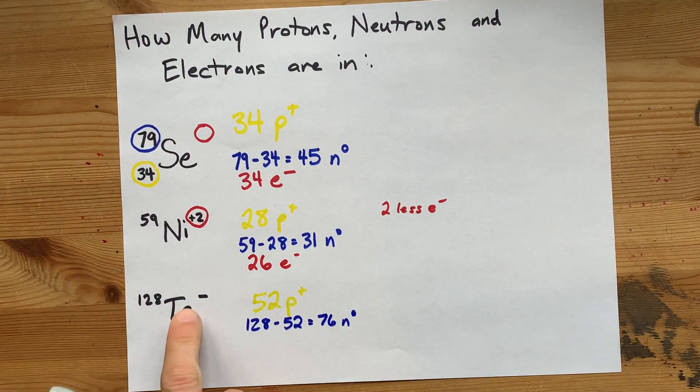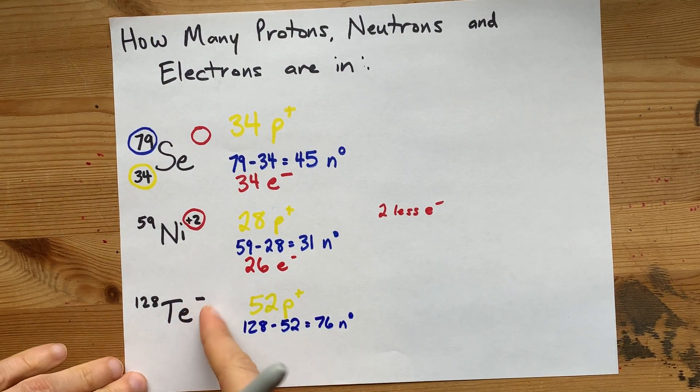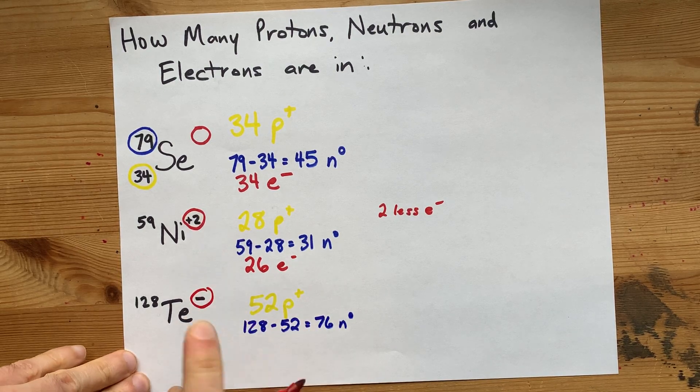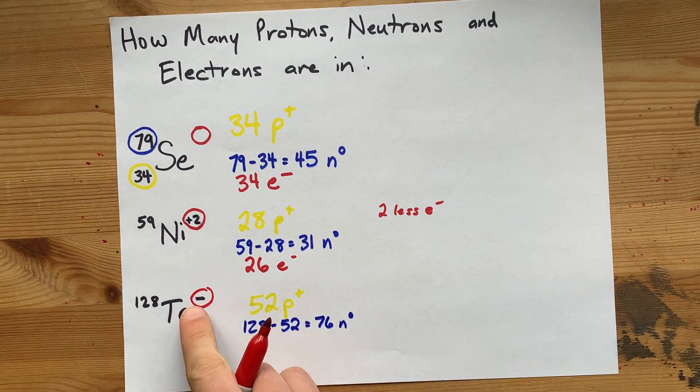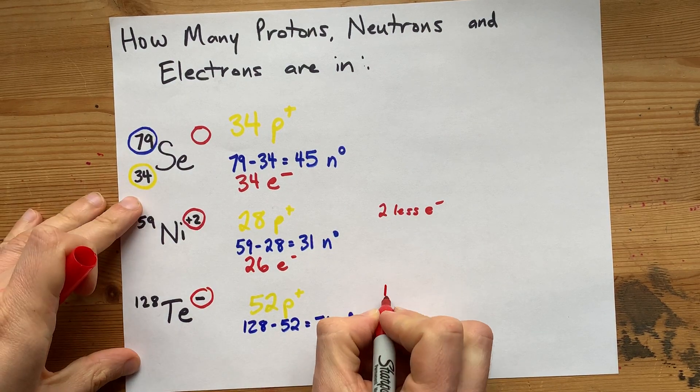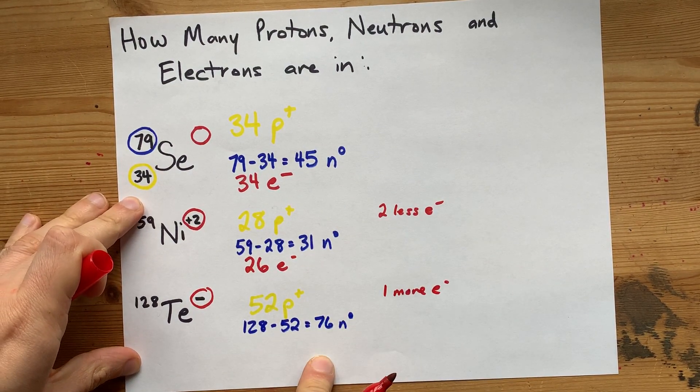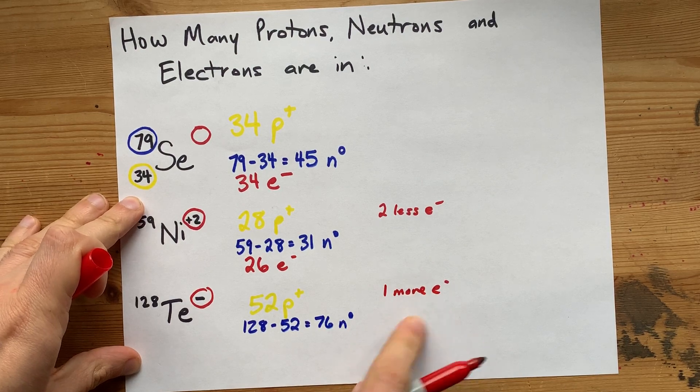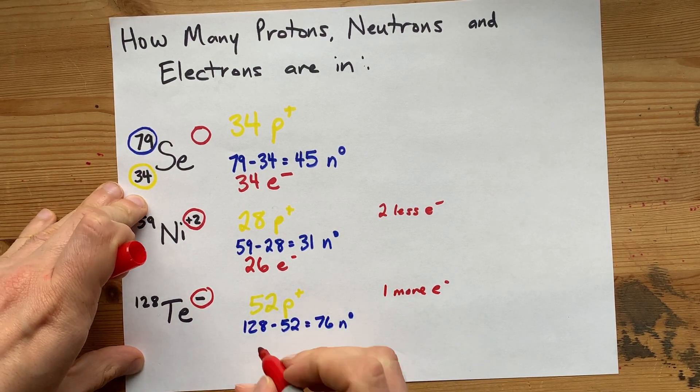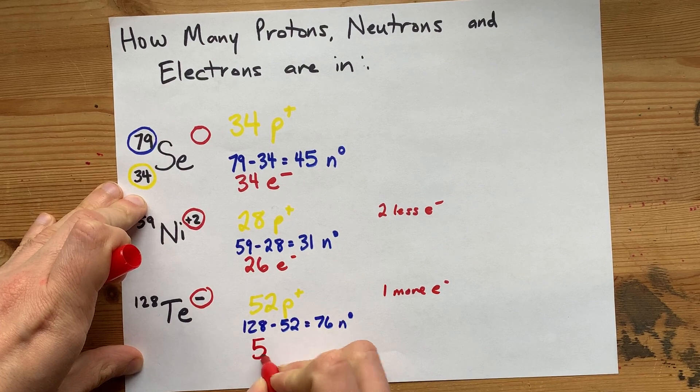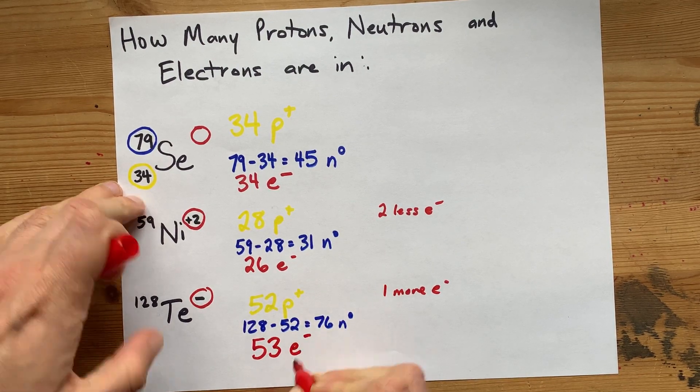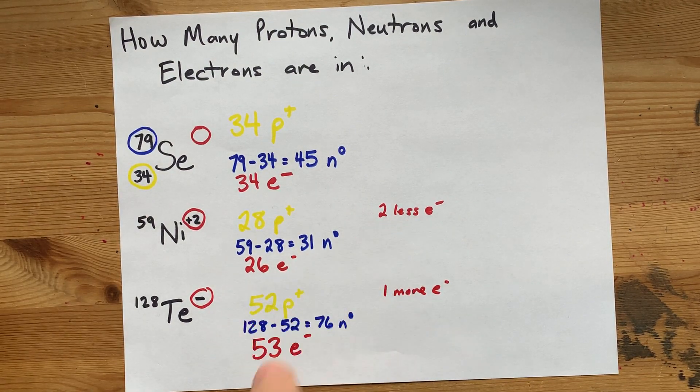And lastly, the charge here is minus 1. If it's just the symbol, we assume the number was 1. This is minus 1, which means you actually have 1 more electron than protons, because adding negatives is what gives you a negative charge. 52 protons. We need 1 more than that in terms of electrons. It's 53.